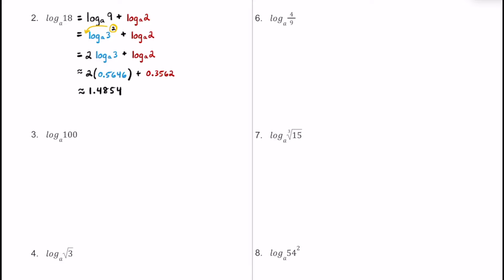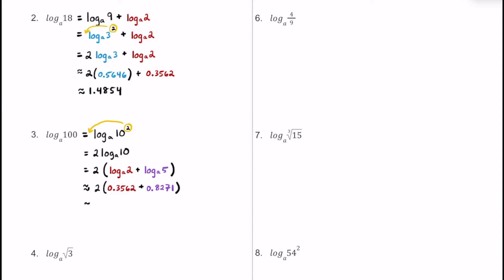For number 3, we have log base a of 100. Since 100 is a perfect square, let's rewrite it as log base a of 10 to the second power. Using the power property, we take that 2 and write it in front, giving us 2 times log base a of 10. Then we use the product property and break 10 into factors of 5 and 2, rewriting this as 2 times the quantity of log base a of 2 plus log base a of 5. Substituting the decimal approximations, we get about 2.3666.